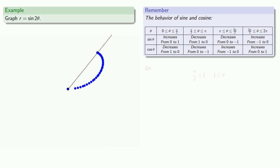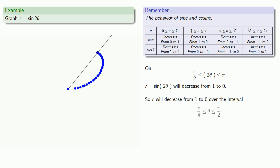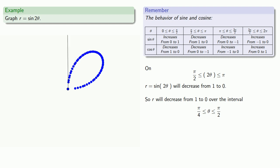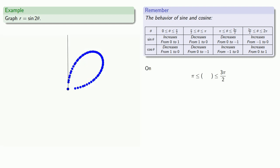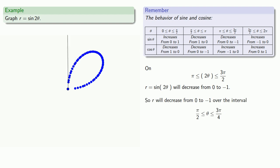We can continue. If the argument is between pi over 2 and pi, then r equals sine of it will decrease from 1 to 0. Since the argument is 2 theta, r decreases from 1 to 0 over theta between pi over 4 and pi over 2, and we continue the graph accordingly. If the argument is between pi and 3 pi over 2, r decreases from 0 to negative 1 — over theta between pi over 2 and 3 pi over 4. Because these are negative numbers, we're actually going backwards even though we're facing angles between pi over 2 and 3 pi over 4.